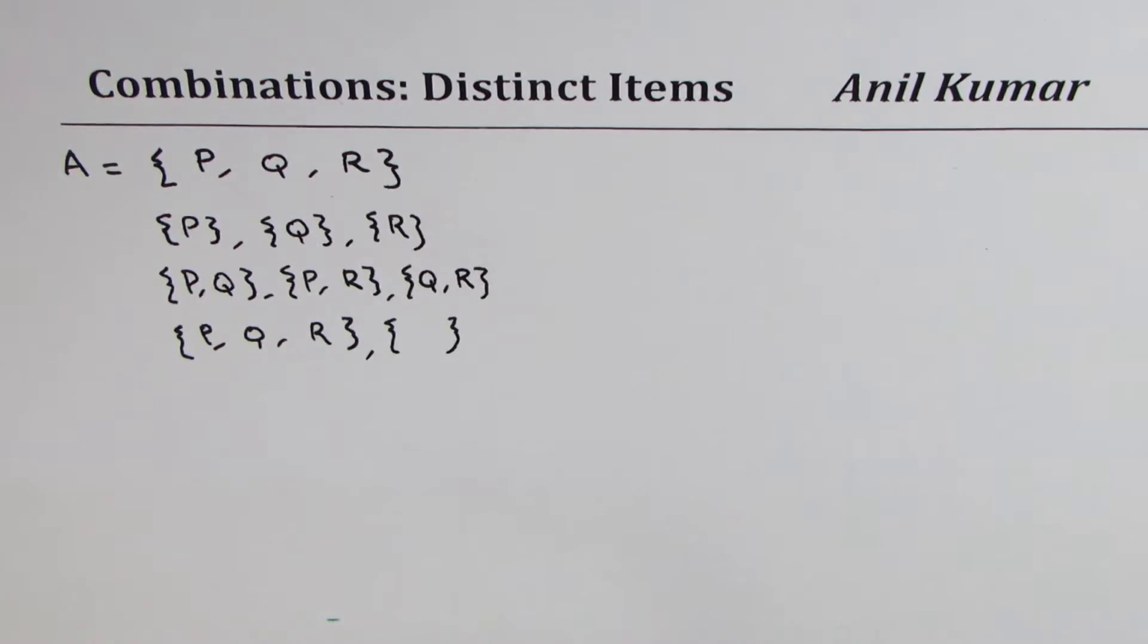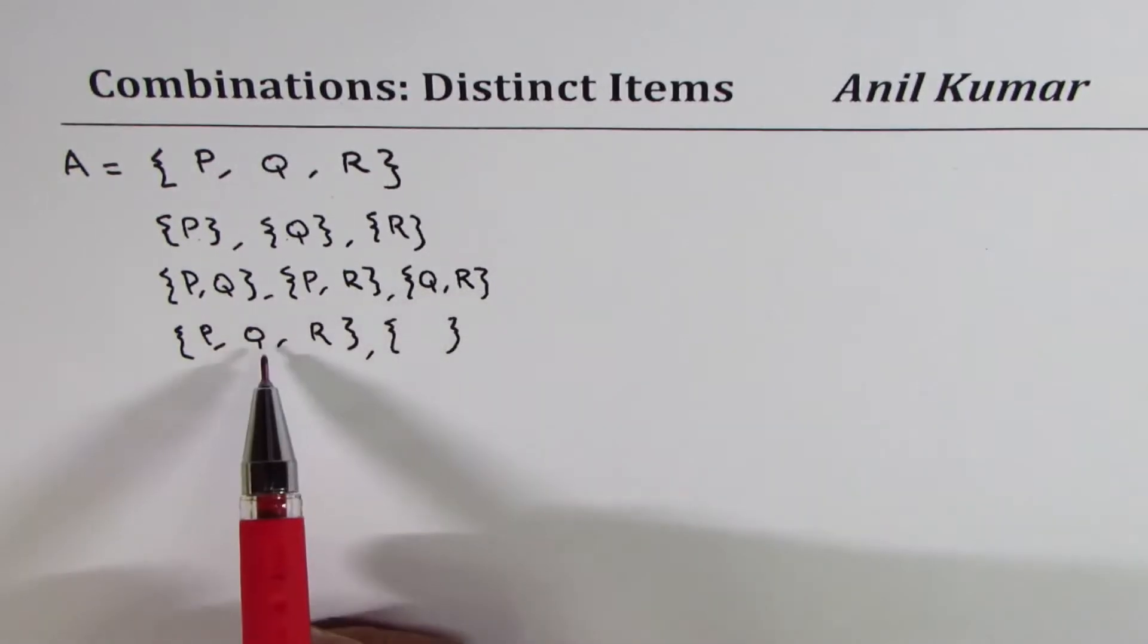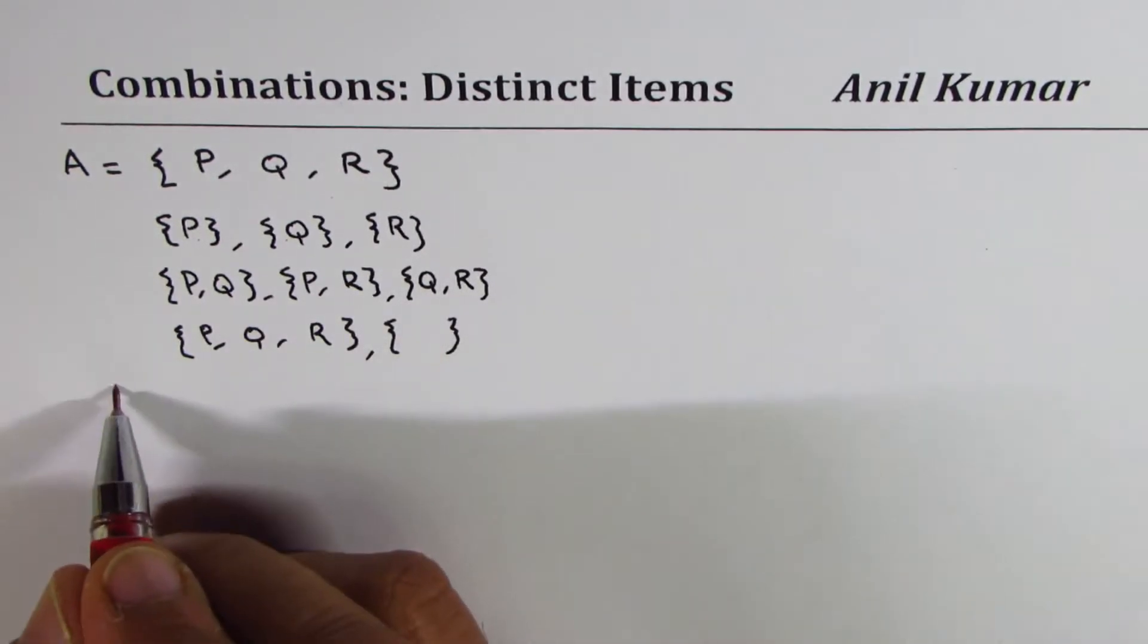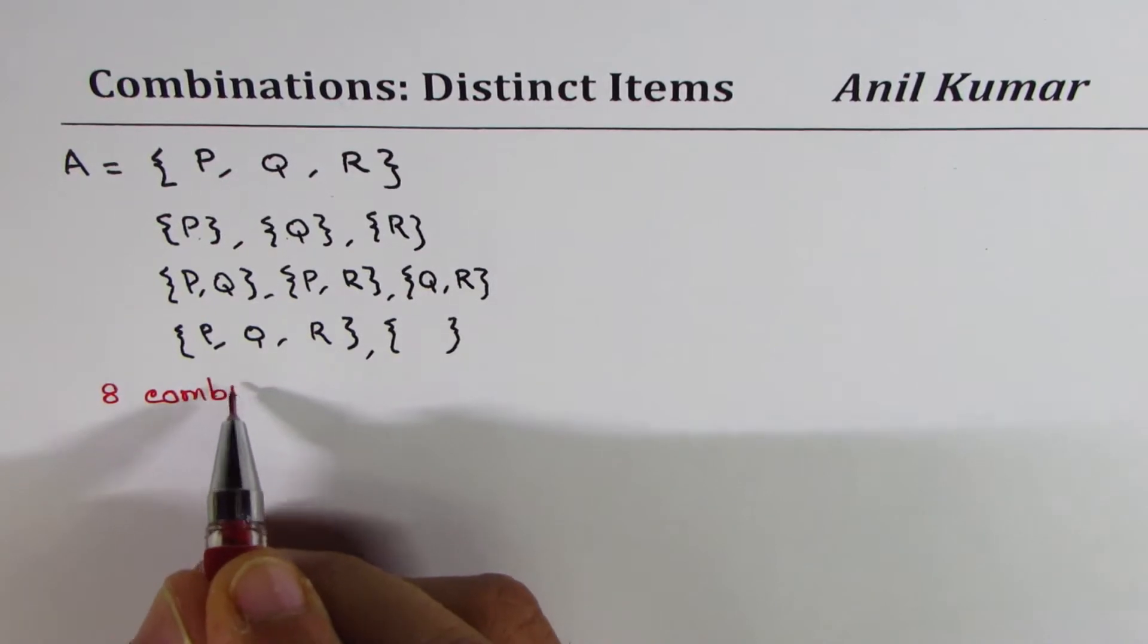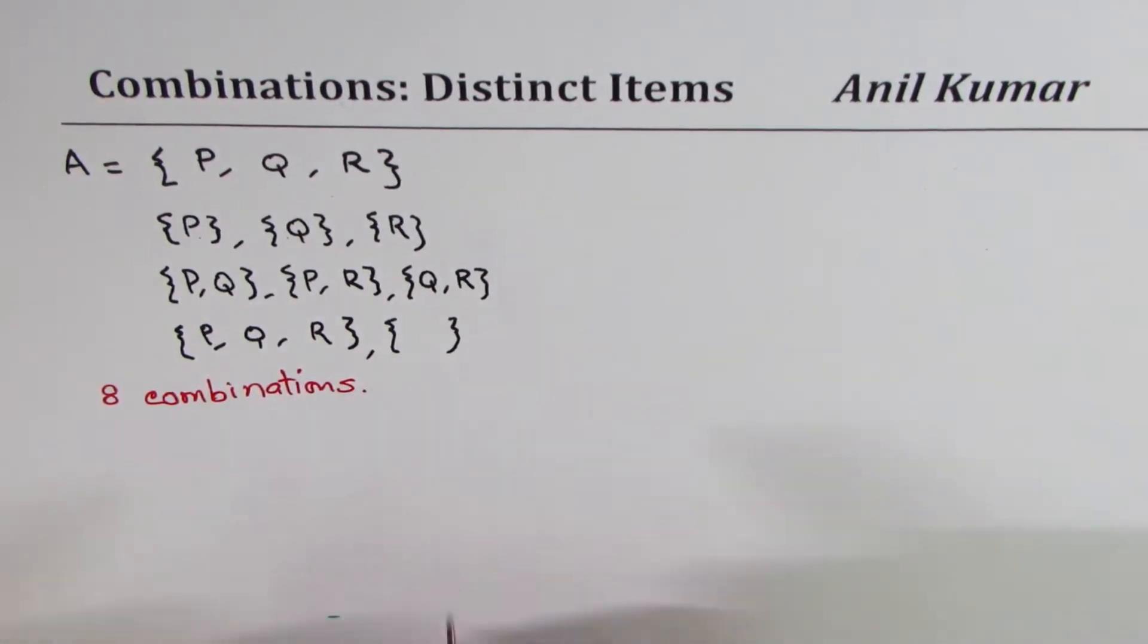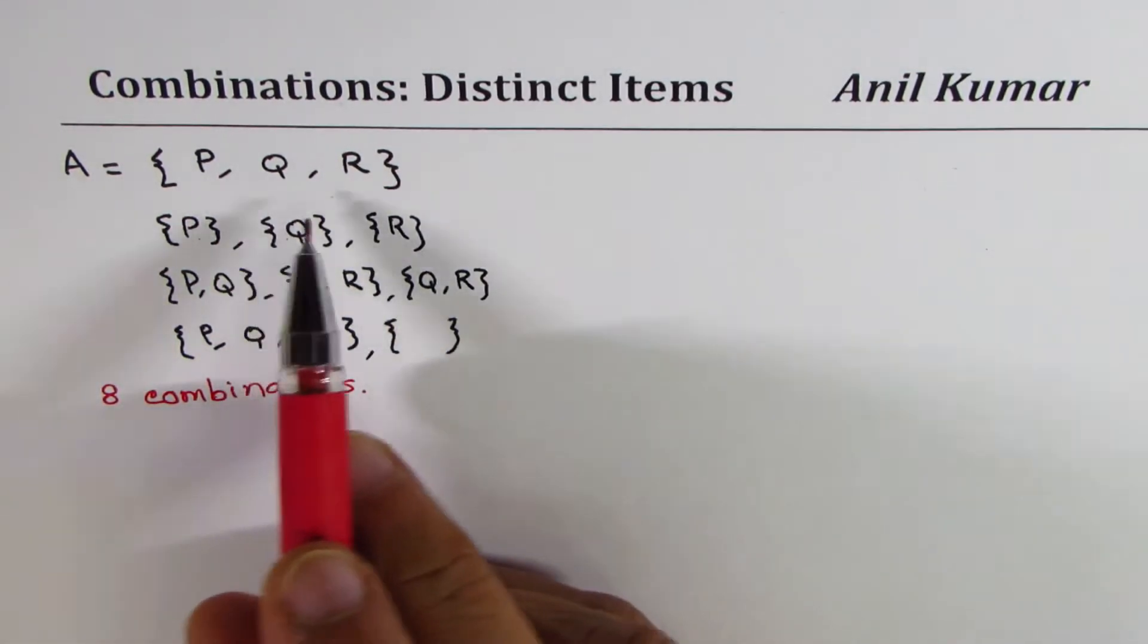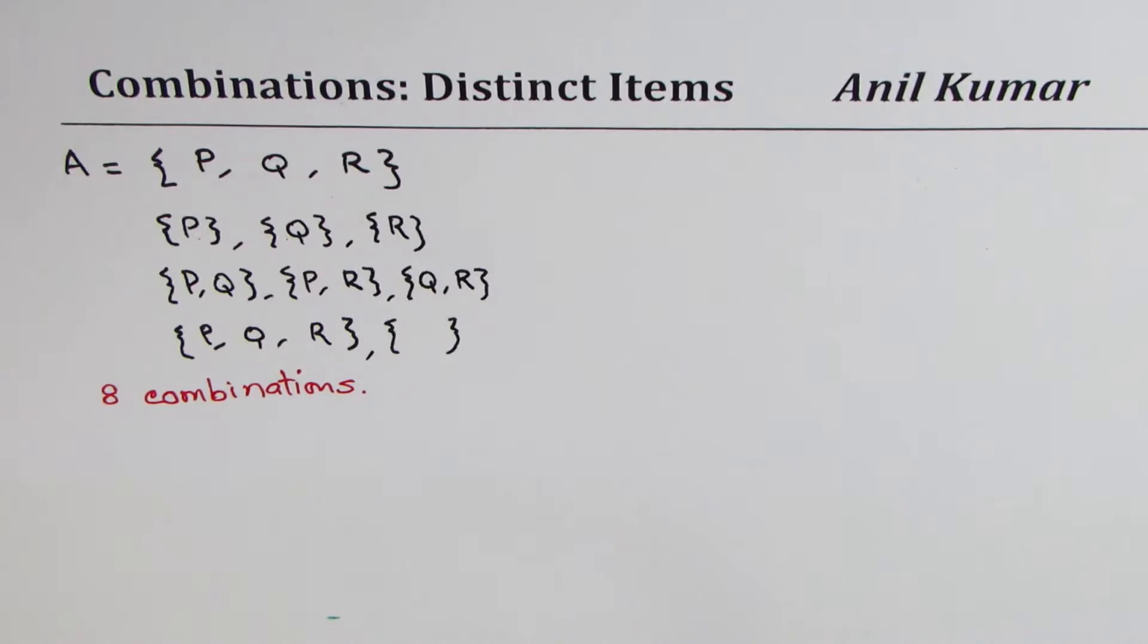Do you see that? So in all, we can form one, two, three, four, five, six, seven, eight. So we can find eight combinations, which includes a null set not selecting any one of these three elements.